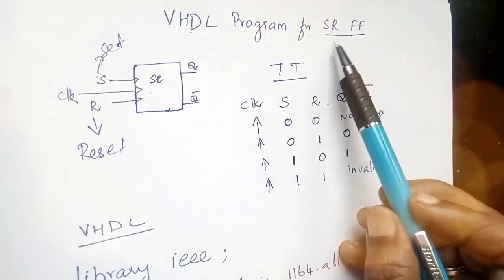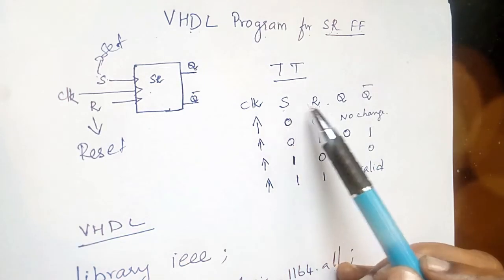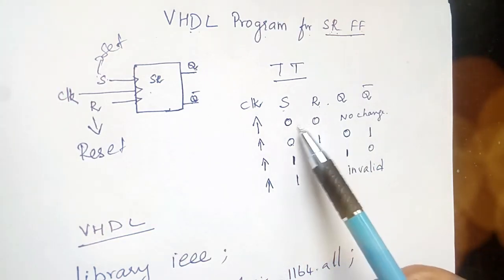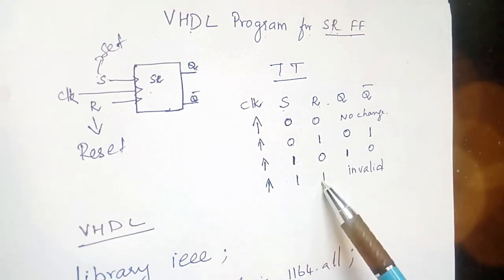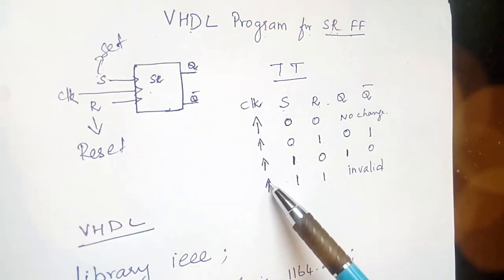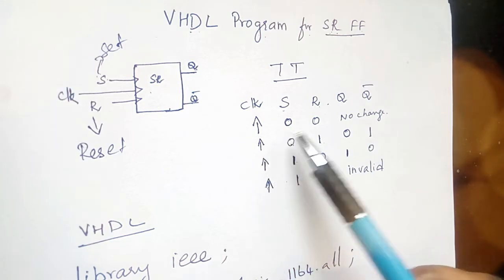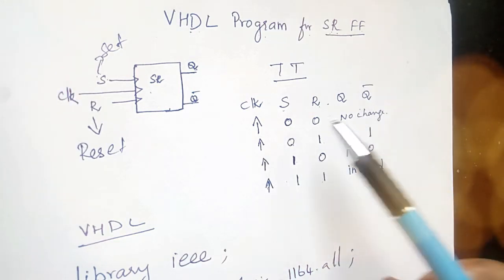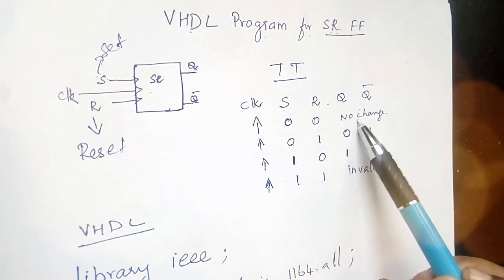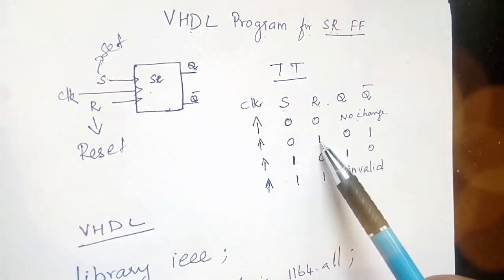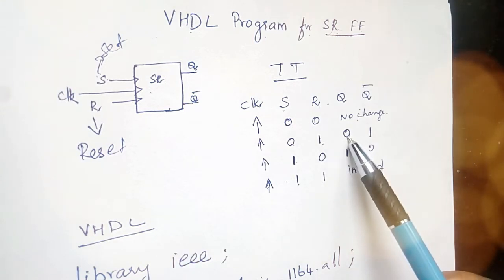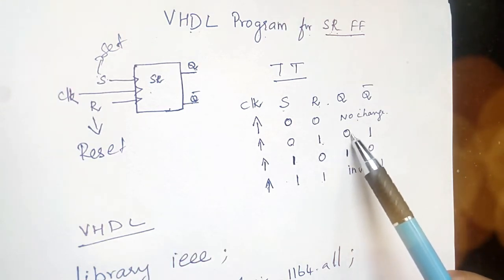This is the truth table for the SR flip flop. With two inputs S and R, there are four possible combinations: 0 0, 0 1, 1 0, and 1 1. Whenever we give a positive clock pulse we get the output from the device. When S is 0 and R is 0 there is no change, and when S is 0 and R is 1, R means reset, so the device is reset and the output is 0.